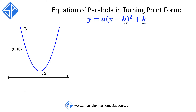In this diagram of the parabola, we can see that it has the vertex at (4, 2). From this information, we can deduce that h is equal to 4 and k is equal to 2. We're then going to substitute these values of h and k into the equation, so that we have y = a(x - 4)² + 2.